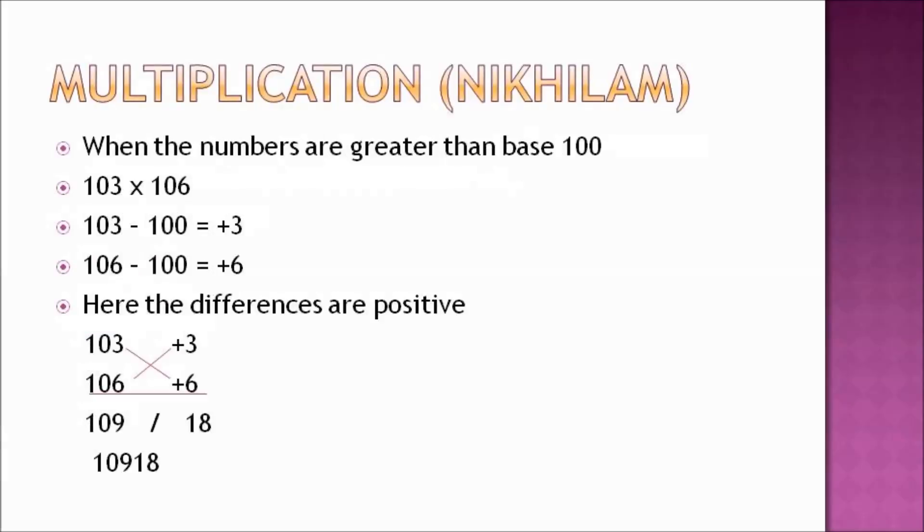Now let us look at multiplication of numbers greater than the base, that is 100. Consider 103 × 106. Here 103 - 100 = +3 and 106 - 100 = +6. Here we notice that the differences are positive.